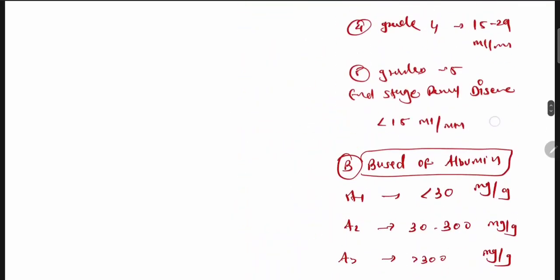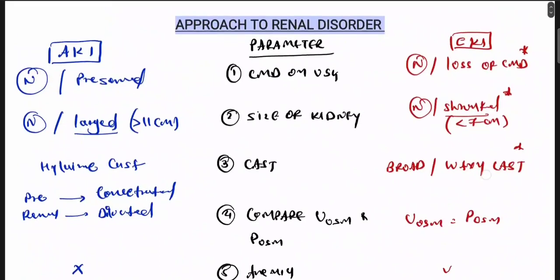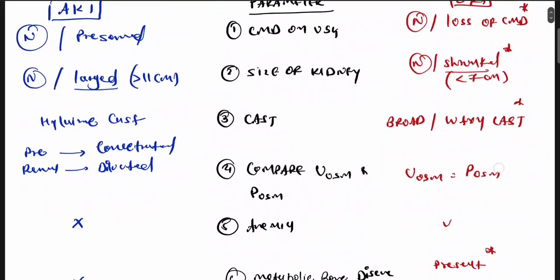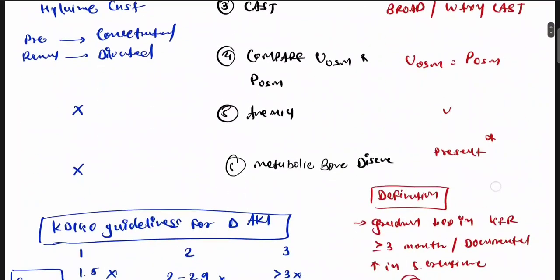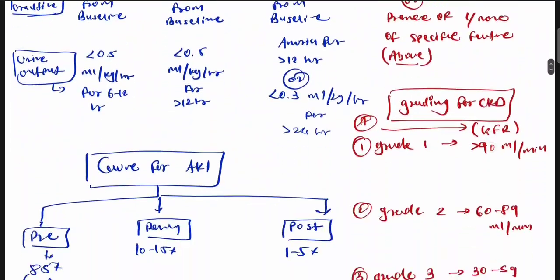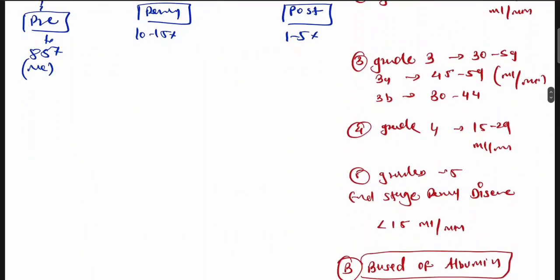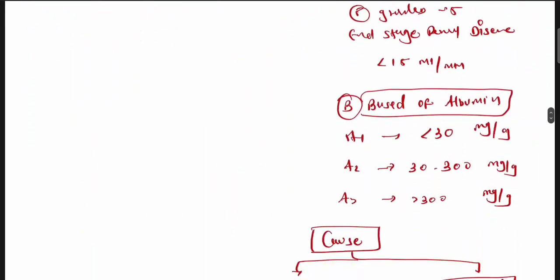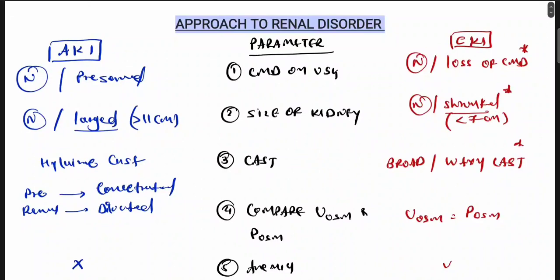This is the approach to renal disorder. Based on these parameters we can differentiate acute kidney injury from chronic kidney disease. We have covered the definition, grading of both AKI and CKD, along with their causes. Treatment will be covered separately.